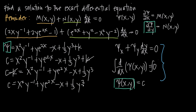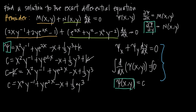One last thing: sometimes you'll be given an initial condition, turning this into an initial value problem. For example, if y(0) = 3, you would plug x = 0 and y = 3 into the right-hand side, find a specific value for c, and state the explicit solution. In this case we weren't given an initial condition, so our final answer is the implicit or general solution: c equals x²y^(−1) + ye^(2x) − x + (1/3)y³.